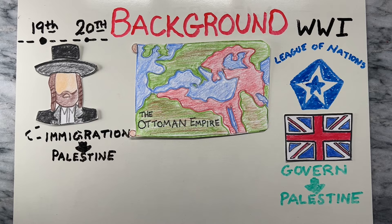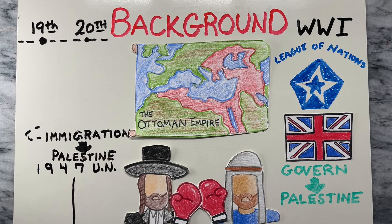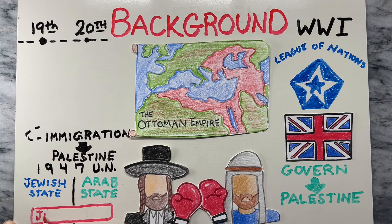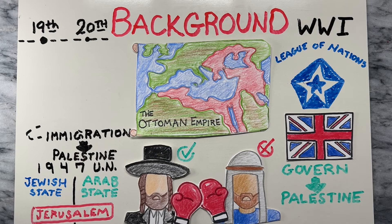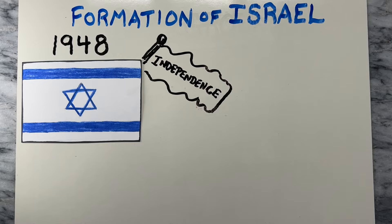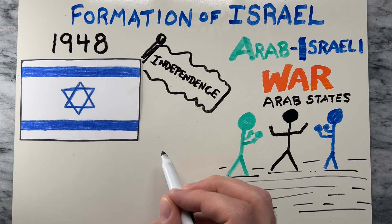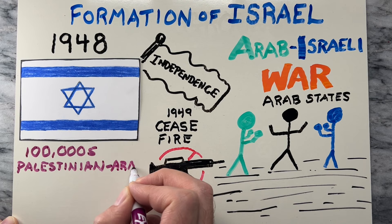In 1947, the United Nations proposed a plan to partition Palestine into separate Jewish and Arab states, with Jerusalem as an international city. Jewish leaders accepted the plan, but Arab leaders rejected it, leading to violence. In 1948, Israel declared its independence, leading to the Arab-Israeli War. Arab states intervened and a ceasefire was eventually declared in 1949. This war resulted in the displacement of hundreds of thousands of Palestinian Arabs, creating the Palestinian refugee crisis.